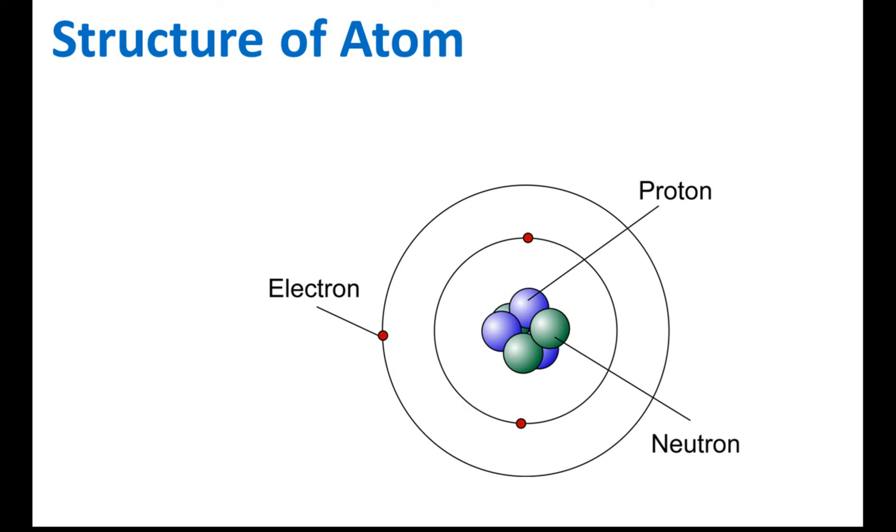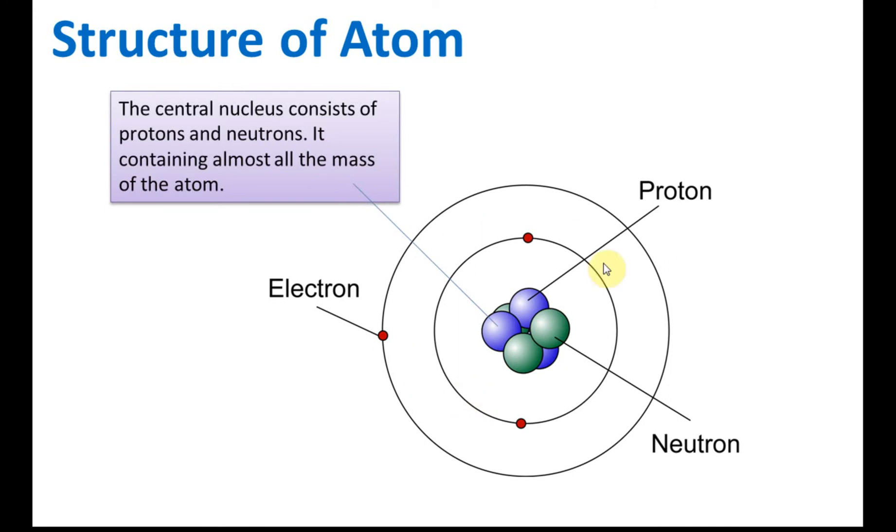Now let's start with the structure of the atom. If you still remember, this is an illustration of an atom. In an atom, there is a nucleus consisting of protons and neutrons, containing almost all the mass of the atom. So every atom has a nucleus, and inside the nucleus we have protons and neutrons. There are electrons which move around the nucleus inside shells called electron shells.